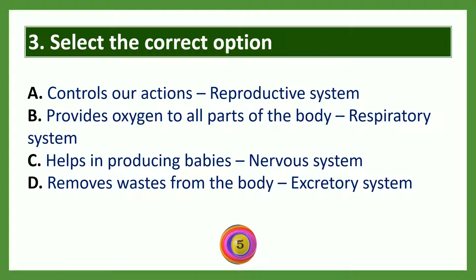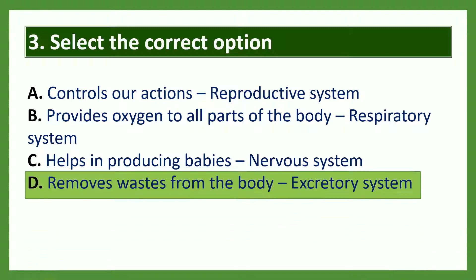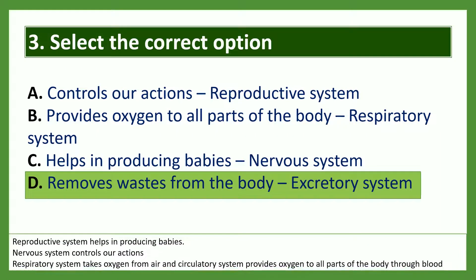Select the correct option: A — controls our actions, reproductive system; B — provides oxygen to all parts of the body, respiratory system; C — helps in producing babies, nervous system; D — removes waste from the body, excretory system. The answer is option D. Reproductive system helps in producing babies; nervous system controls our actions; respiratory system takes oxygen from air; and circulatory system provides oxygen to all parts of the body through blood.